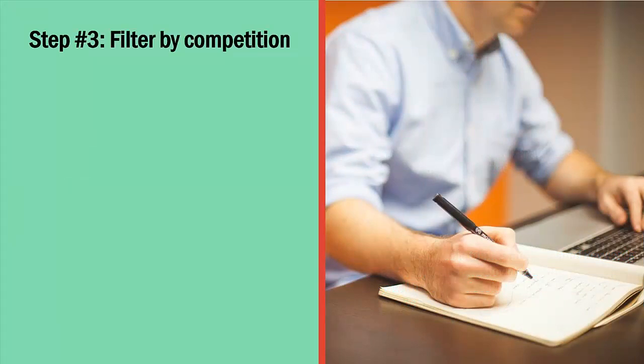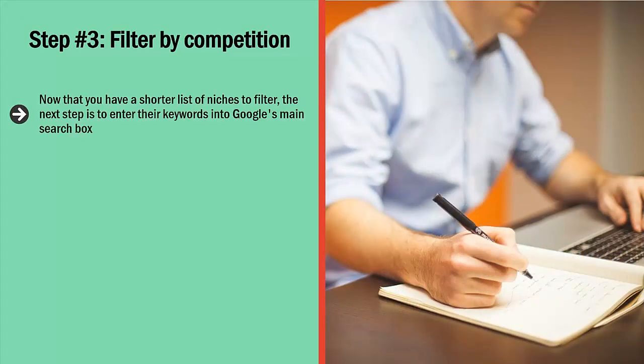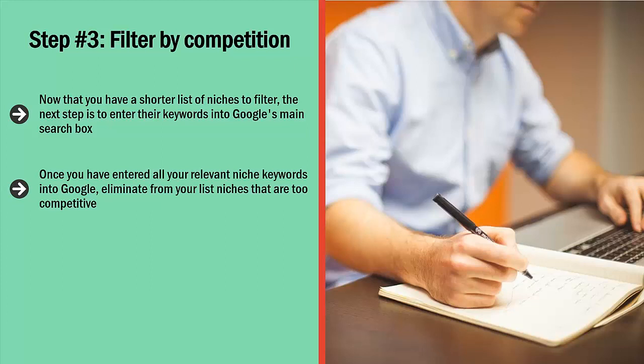Step 3: Filter by Competition. Now that you have a shorter list of niches to filter, enter their keywords into Google's main search box. When you enter a search phrase into Google, you will get results, and at the top left corner Google will inform you how many pages target that search phrase. Take note of this number and write it down next to each niche keyword. Once you have entered all your relevant niche keywords, eliminate from your list niches that are too competitive — those with too many pages targeting them.